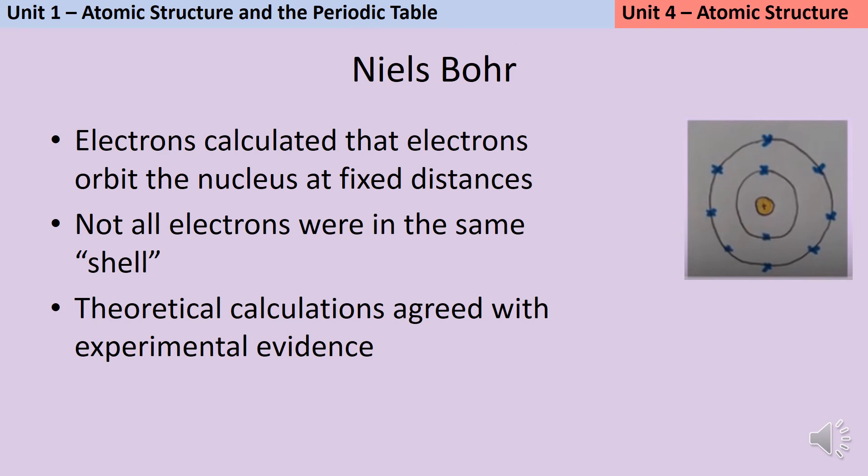Rutherford's experiments led him to conclude that electrons orbited the outside of the atom rather than being studded in the middle like in the plum pudding model. But they didn't tell him anything about where those electrons were.